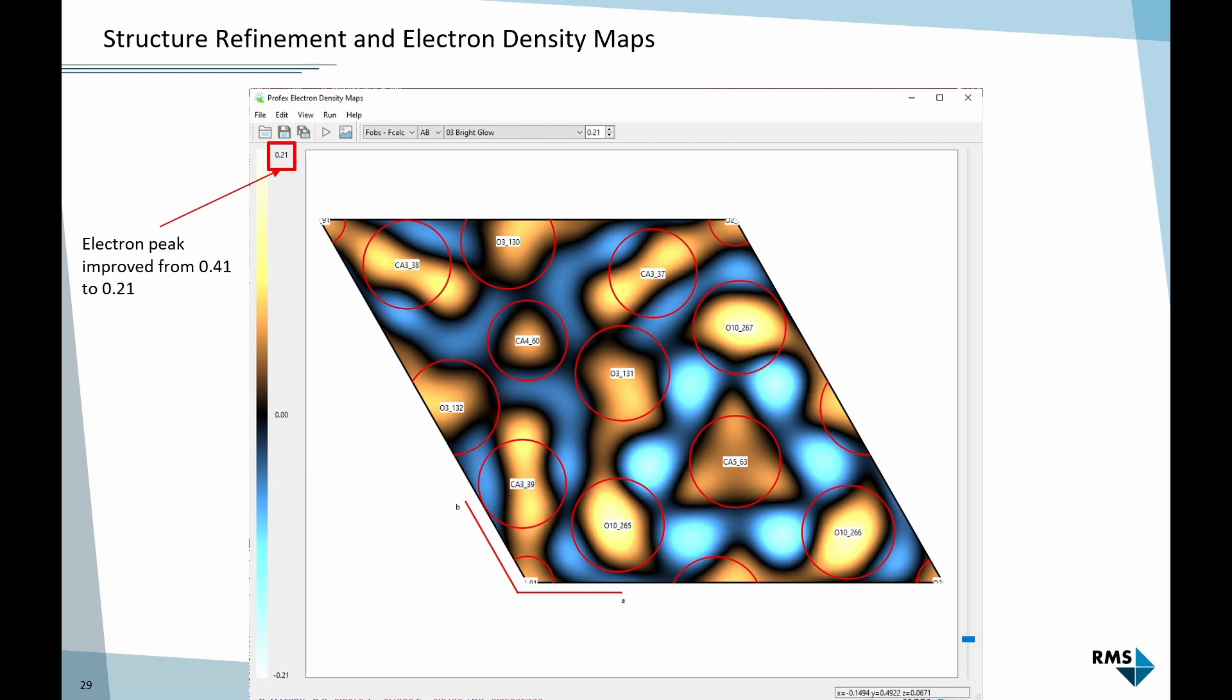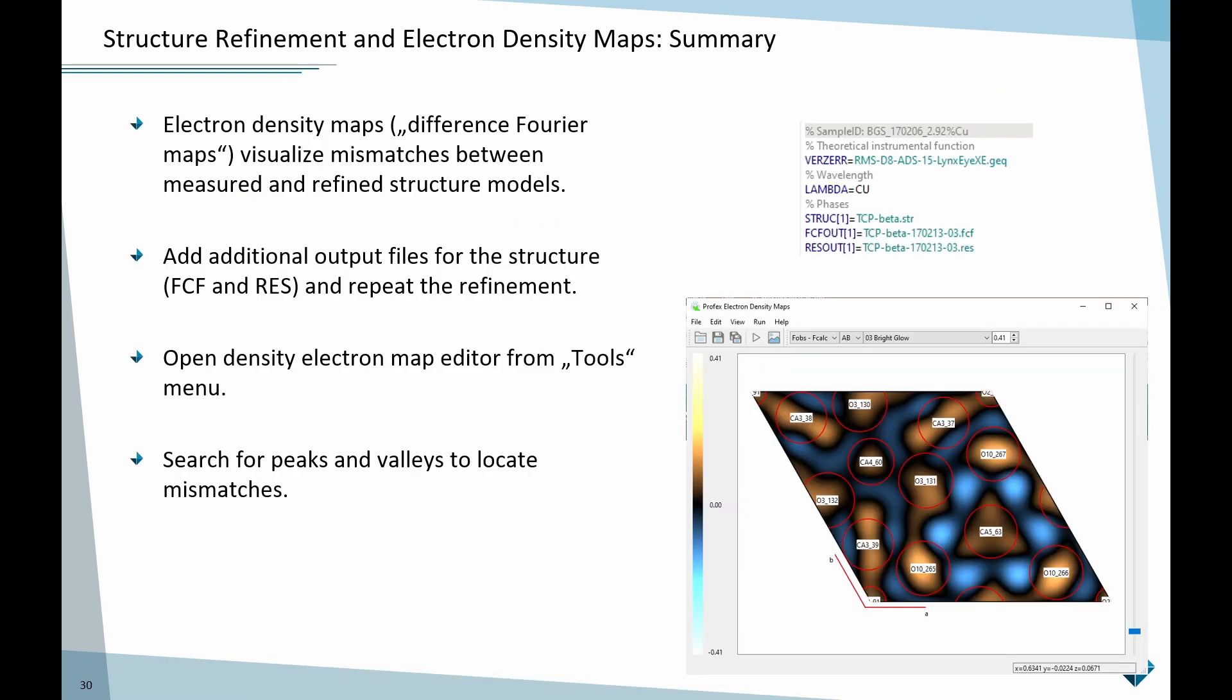Now the scale was changed. The highest mountain and the deepest valley is now 0.2 electrons rather than before 0.4. Calcium 5 doesn't show as a particular strong misfit anymore. So I can track movements of ions if suddenly the position is not correct anymore.